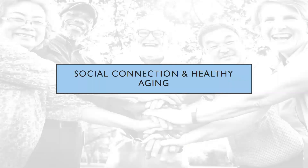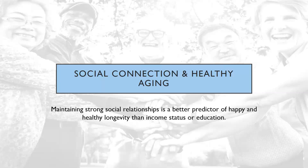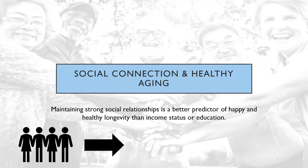Although it is difficult to state that any one social determinant of health is more meaningful than another, it is impossible to deny the critical influence of social support in determining healthy aging. How happy we are in our relationships with family, friends, and neighbors shape our health and our ability to age successfully in powerful ways. In fact, according to data from the Harvard Study of Adult Development, which is one of the longest, most comprehensive studies of aging ever conducted, maintaining strong social relationships was found to be a better predictor of happy and healthy longevity than several other social determinants, including income status and education.